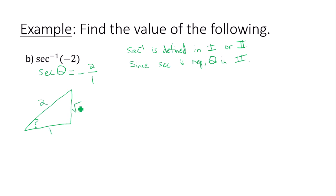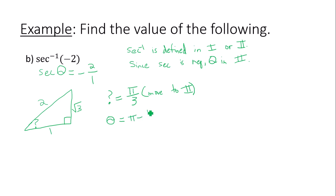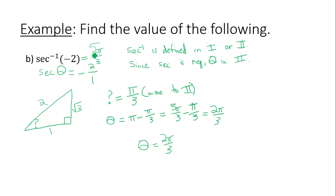Who is always across from the square root of three? My reference angle is 60 degrees — pi over three. But we have to move this angle to quadrant two. Our quadrant two final answer will be pi minus the reference angle: pi minus pi over three, which is three pi over three minus pi over three — giving two pi over three. Theta is two pi over three, and that is the answer to our inverse trig expression.